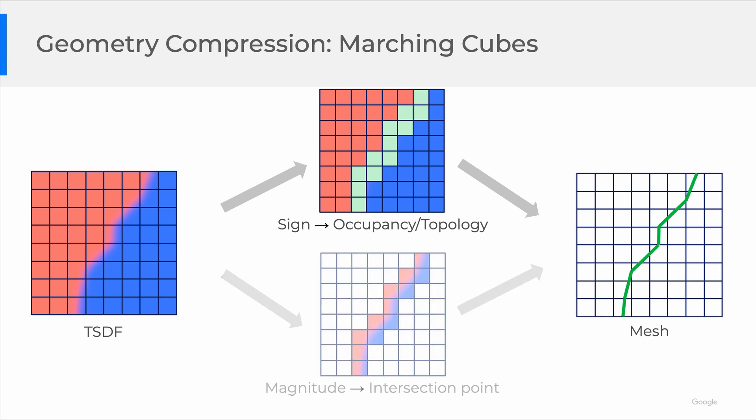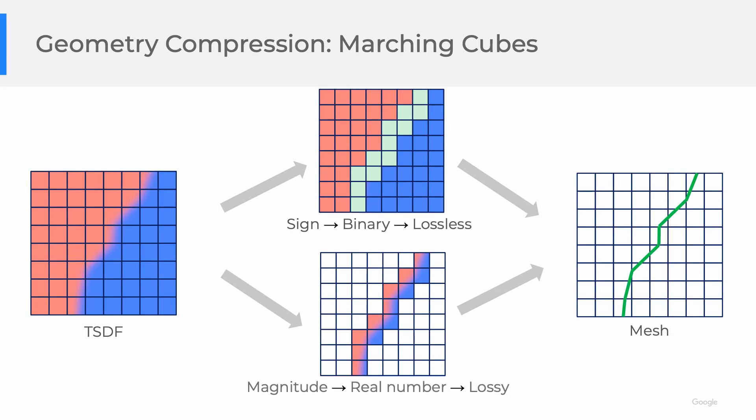Then it calculates where exactly the surface intersects with the grid using the magnitudes. Note that the signs are binary, while the magnitudes are real numbers. This inspired us to compress the signs losslessly, but magnitudes in a lossy way.